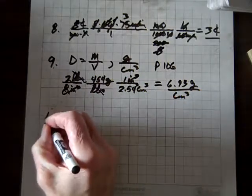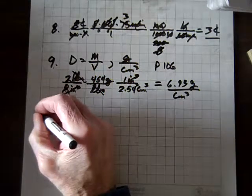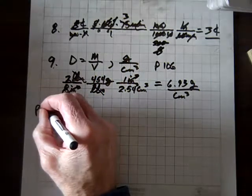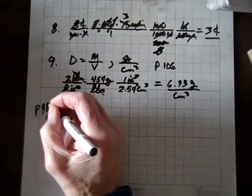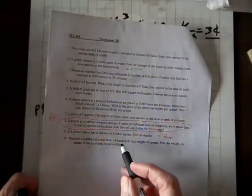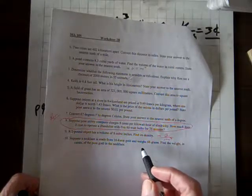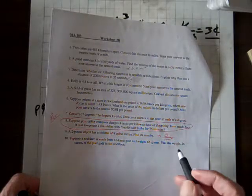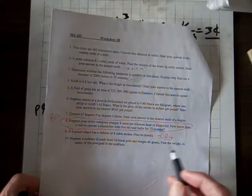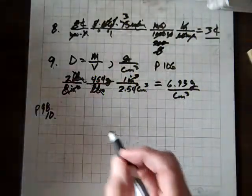We have one more, and that's number 10. You can find this information about gold on page 98. It says suppose a necklace is made from 16 karat gold and weighs 66 grams. Find the weight in carats with a c of pure gold in the necklace.